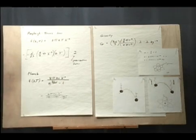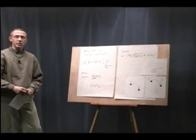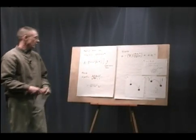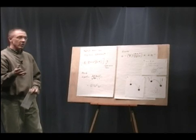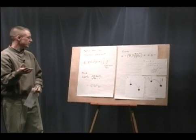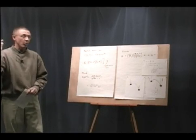this formula drops back into eight pi kt lambda to the minus fourth because these terms drop out. And at long wavelengths, excuse me, at very short wavelengths, it goes to zero.